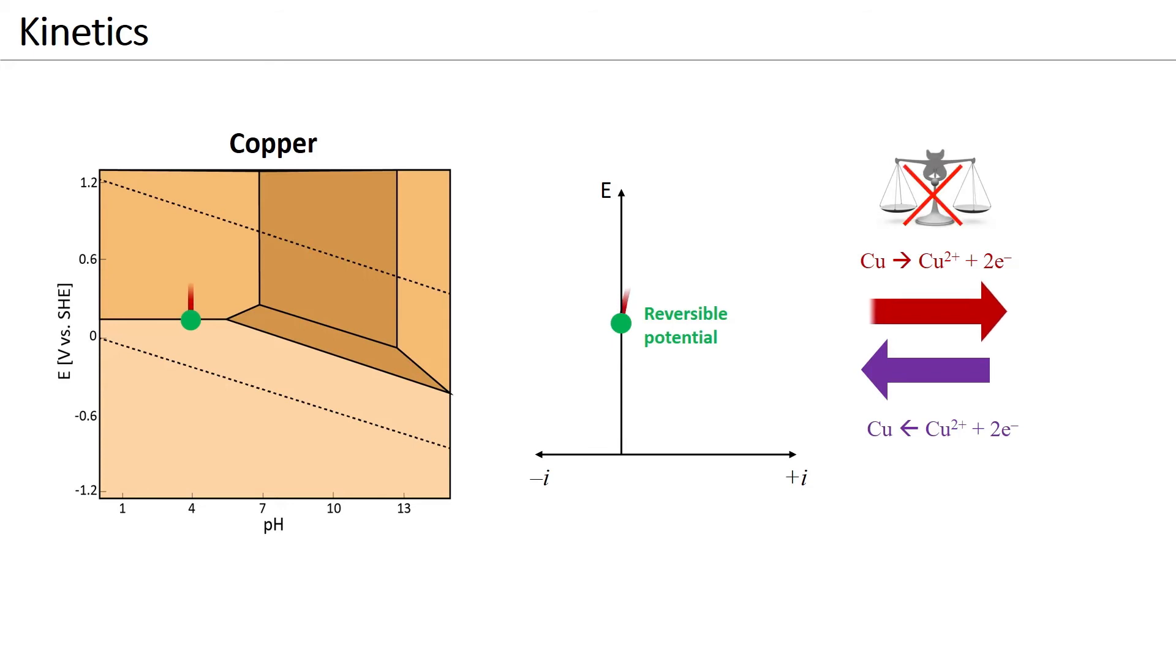With a change of potential in positive direction, the dissolution of copper is boosted. The anodic reaction rate increases.